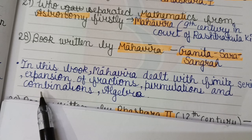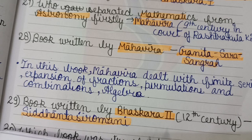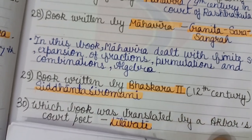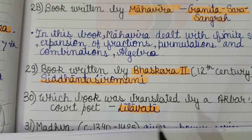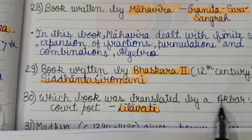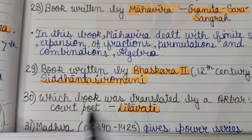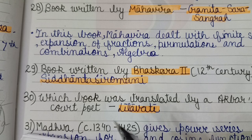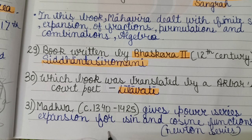In the Ganitasarasangraha, Mahavira dealt with finite series, expansion of fractions, permutations and combinations, and algebra. Bhaskara II wrote the Siddhanta Shiromani in the 12th century, which has four parts, including Lilavati — the part translated by Akbar's court poet. Madhava (1342–1425) gave the power series expansion for sine and cosine functions, also known as the Newton series.